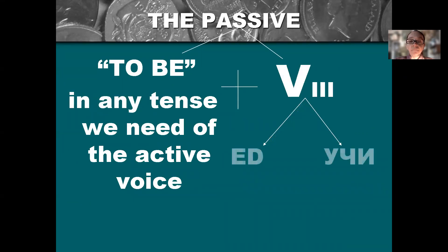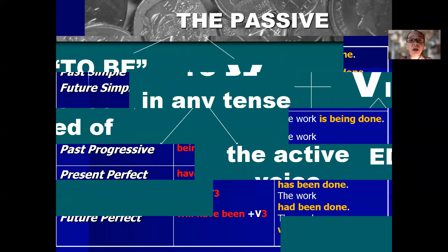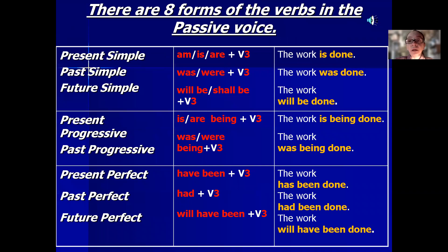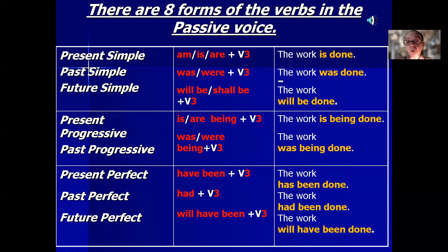Let's have a closer look at how this works in certain tenses. Present simple: the forms of 'to be' are am/is/are, so we say am/is/are plus the third form — 'the work is done.' Past simple: 'to be' becomes was/were — 'the work was done yesterday.' Future simple means 'will', so it's will be — 'the work will be done tomorrow.'